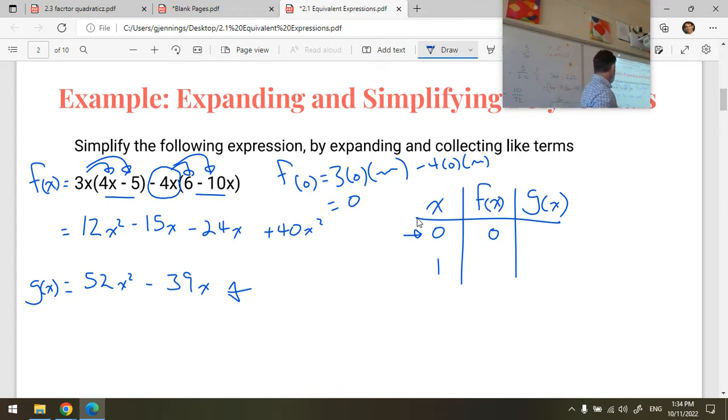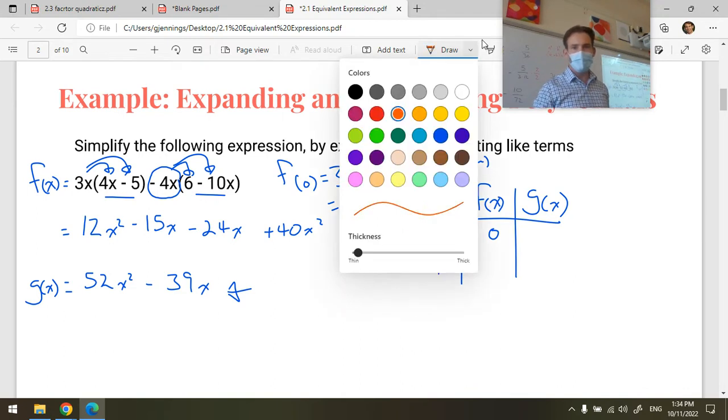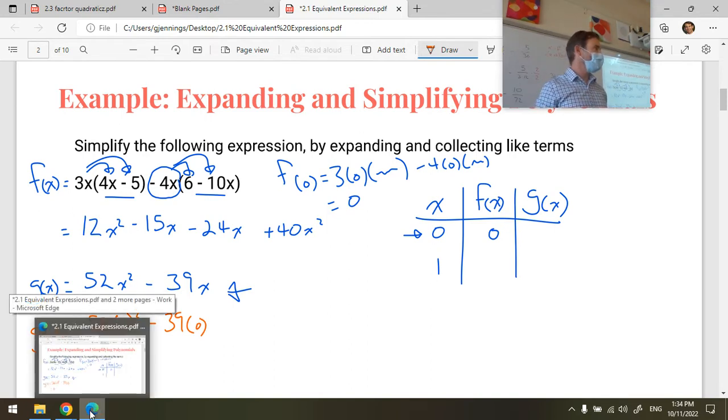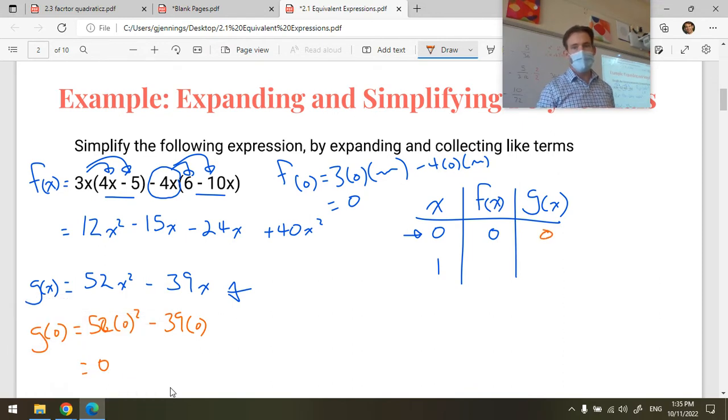If I look down here, g at 0. Let's test g at 0. So g at 0 is going to be 52 multiplied by 0 squared minus 39 times 0. So g at 0 is also 0. Very fast to do these tests, right? So I know that it's the same at 0.